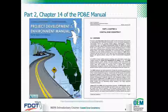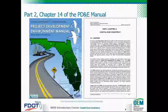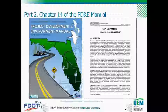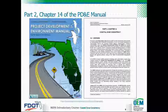This chapter, entitled Coastal Zone Consistency, outlines procedures for determining the effects of transportation projects on Florida's coastal zone. You may want to have this chapter handy as you go through this training. This chapter is available on the FDOT Office of Environmental Management website using the link found at the bottom of this slide. This link can also connect you to other chapters of the PD&E Manual that are referenced throughout this training.